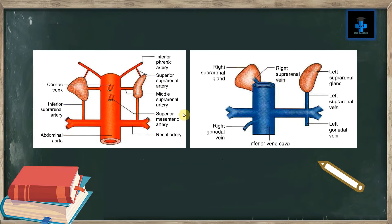Here is a pictorial representation where you can appreciate the superior suprarenal artery, the middle suprarenal artery, and the inferior suprarenal artery. Both glands are shown, and here you can see the right suprarenal vein and the left suprarenal vein.